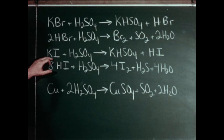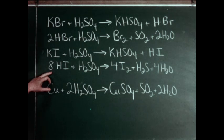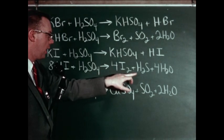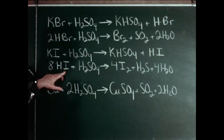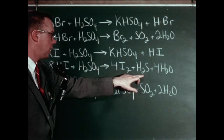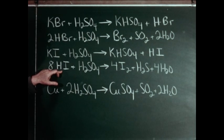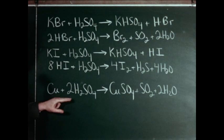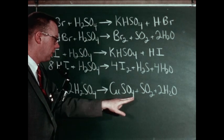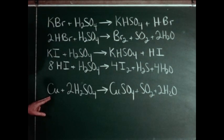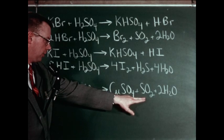When we used potassium iodide with concentrated sulfuric acid, the initial product was hydrogen iodide, which reacted with excess sulfuric acid to produce iodine and hydrogen sulfide. From these two equations, we can see that HI is a better reducing agent than HBr. Then we reacted concentrated sulfuric acid with copper, and found that the products were copper sulfate and sulfur dioxide in water — another reaction of concentrated sulfuric acid as an oxidizing agent, in this case its reduction to sulfur dioxide.